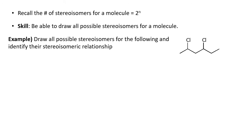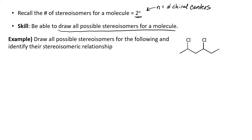We can calculate the number of stereoisomers in a molecule using 2 to the n power, where n equals the number of chiral centers. The first skill in this section is drawing all possible stereoisomers for a molecule. In the first example, we have two stereocenters, so 2 squared equals four — we should find four stereoisomers and identify their relationships.